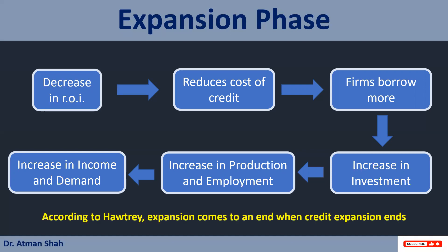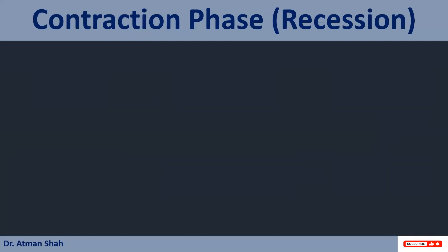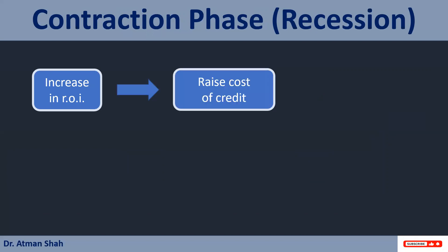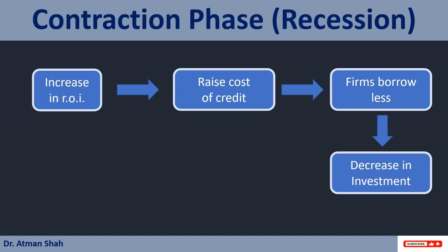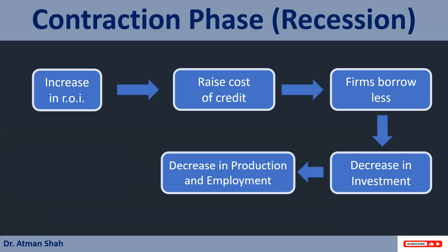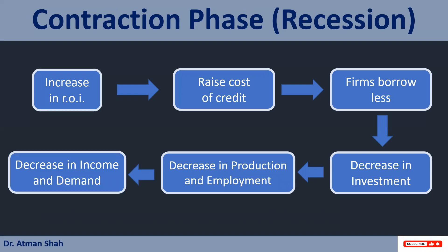According to Hawtrey, expansion comes to an end when credit expansion ends. So now we have the contraction phase or recession. An increase in the rate of interest leads to an increase in the cost of credit, and therefore firms borrow less from the banking system. Lower the borrowing, lower the investment, and lower investment reduces production and employment in the economy. And therefore we have a decrease in income and demand. So an increase in the rate of interest reduces income and demand in the economy.